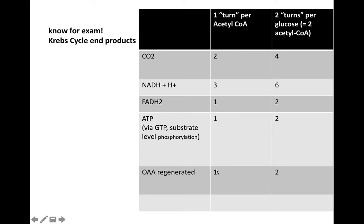On the exam, if asked for end products per glucose, remember you make two acetyl-CoA per glucose, so double everything. Per glucose (two acetyl-CoA): 4 CO2, 6 NADH, 2 FADH2, 2 ATP by substrate-level phosphorylation, and regeneration of two OAA molecules.